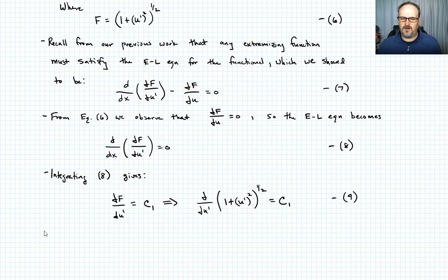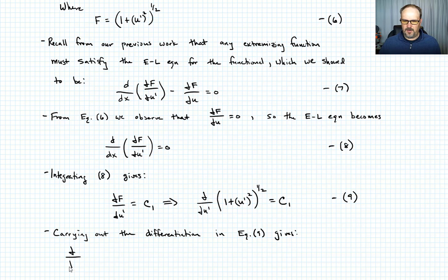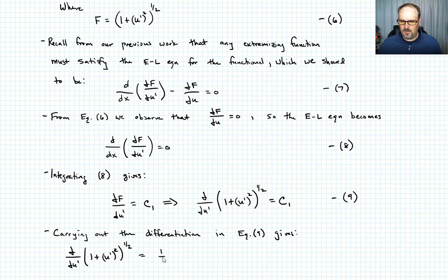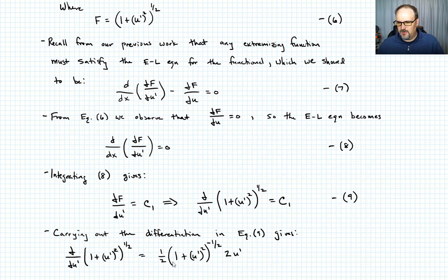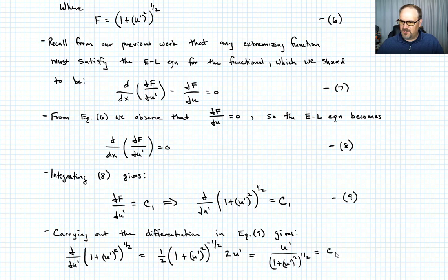Carrying out the differentiation in equation 9 via the chain rule: the partial with respect to u prime of (1 plus u prime squared) to the one-half equals one-half times (1 plus u prime squared) to the negative one-half times 2u prime. The 2 cancels with the one-half, leaving u prime over (1 plus u prime squared) to the one-half equals c1 — call that equation 10.